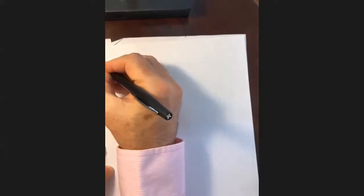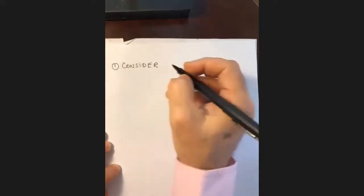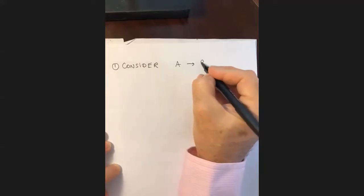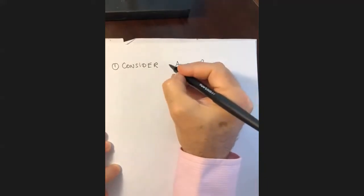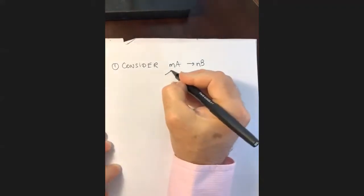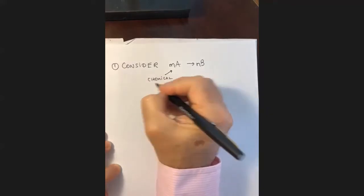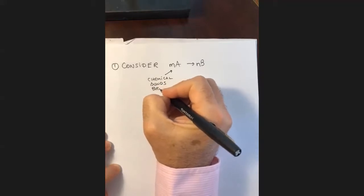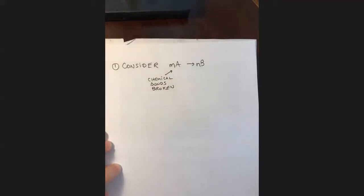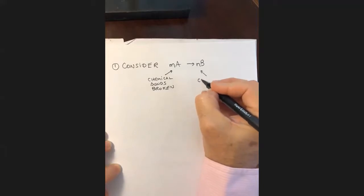Let's consider a chemical reaction — say, reactant A is being converted into product B, with some stoichiometric coefficients. What is happening in the reactants? In the reactants, chemical bonds are being broken. What is happening in the products? In the products, new chemical bonds are being formed.